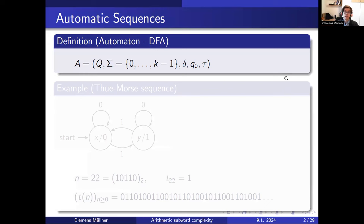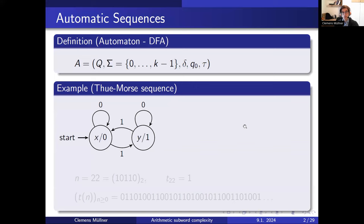To define an automatic sequence, first we need to define what an automaton is, and I do this in terms of the transition diagram. We have a finite set of states — here one state X and one state Y — and a finite input alphabet, here 0 and 1. We have a complete transition function, meaning for every state there is exactly one outgoing edge for every digit. We have an initial state indicated by 'start,' and an output function: X is mapped to 0 and Y is mapped to 1. This is a classical deterministic finite automaton.